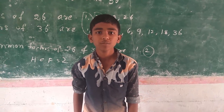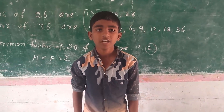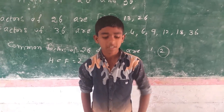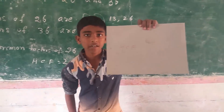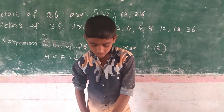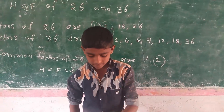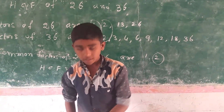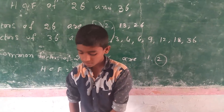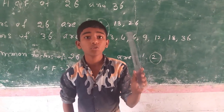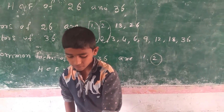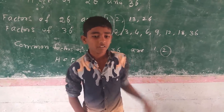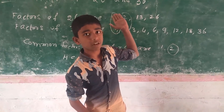Now we will do a simple activity to understand about HCF. The materials used for this activity are: a thick paper, a pencil, an eraser, a scissor, a ruler, and sketches. This is the activity for the same example.